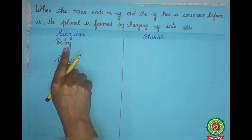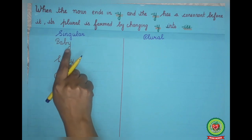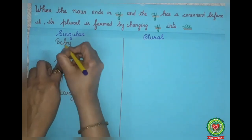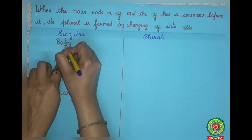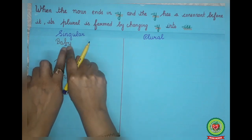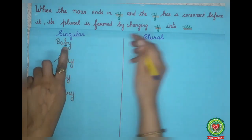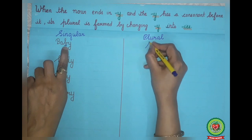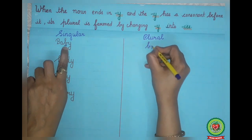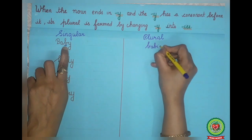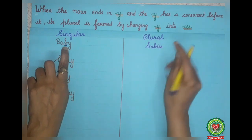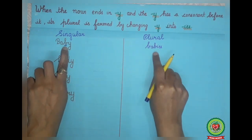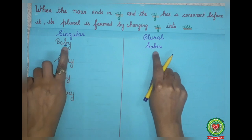Number one noun: baby. You can see the singular noun ends with Y, and before Y, the letter B is there, which is a consonant. So we will make it plural by changing Y to IES — B, A, B, I, E, S — that is, babies will be the plural noun.